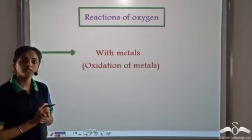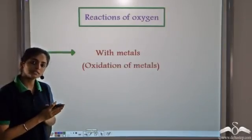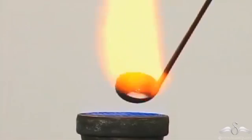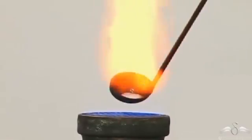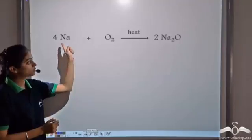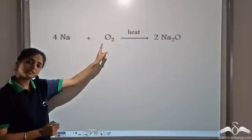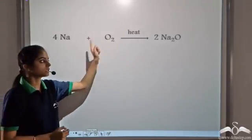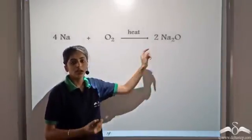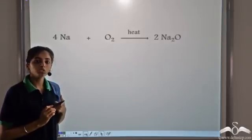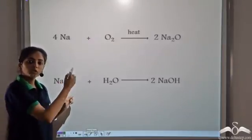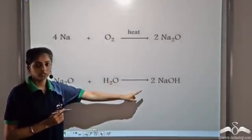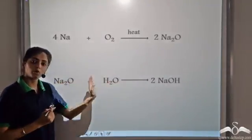Now let's see the reaction of oxygen with metals. When oxygen reacts with metals, we call it the oxidation of metals. We start with sodium. Sodium burns with atmospheric oxygen and forms golden yellow flames. It reacts with oxygen when heated to form Na₂O, the corresponding metal oxide. When metallic oxides react with water, they form the corresponding hydroxides. So Na₂O reacts with water to form NaOH, that is sodium hydroxide.